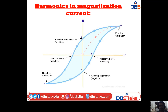Here we have the BH curve, drawn between B and H, where B is flux density and H is magnetizing force. The curve goes from the negative direction to the positive direction, and we have points A, B, C, D, E, F, G. Point A is the middle point of the curve. The curve appears in the four-quadrant manner.